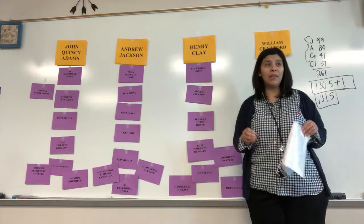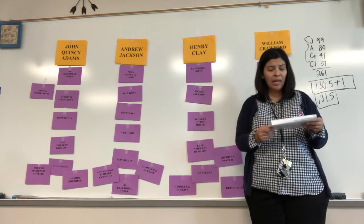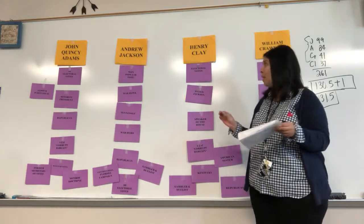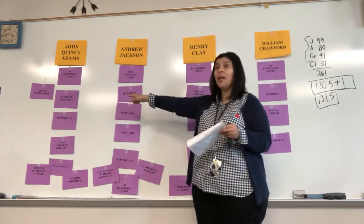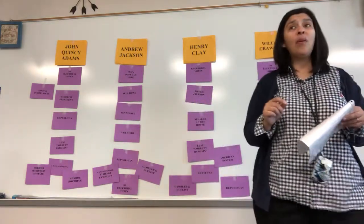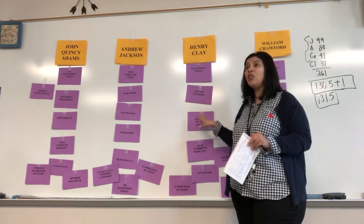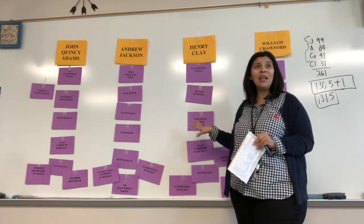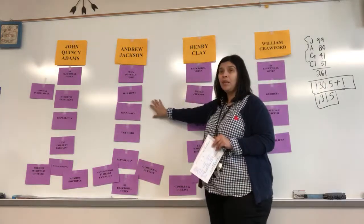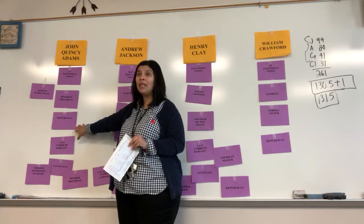This is where the corrupt bargain comes in. Clay will meet privately with Adams, assuring him of his support in the House so Adams wins the election. Clay tells Adams: I am the Speaker of the House, I have the power, I can throw the election your way. Clay's ulterior motive — if Jackson wins, Clay can never be president, but if Adams wins, he can.